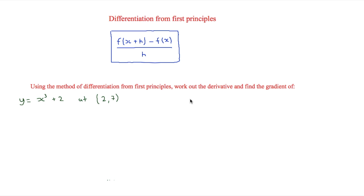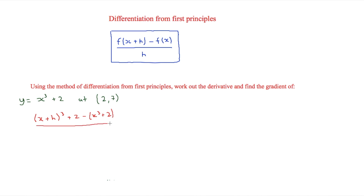The final question is y = x³ + 2 at the point (2, 7). We use the same method, but now we have an x³ term and a constant. Our expression becomes (x+h)³ + 2, minus (x³ + 2) — remembering to put that last part in brackets — all over h.